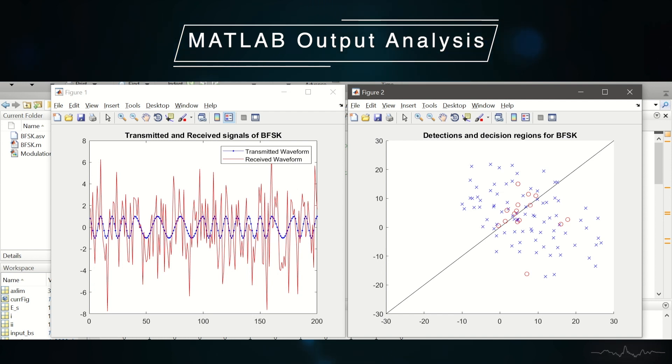There's a decision boundary which is the black line passing through the figure. We can clearly see that there are a lot of red circles present and hence there is a good probability of error for this particular SNR value.